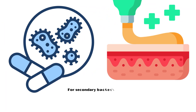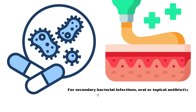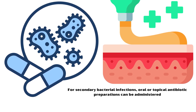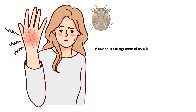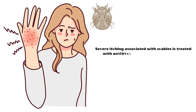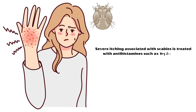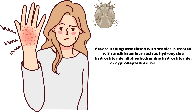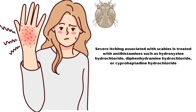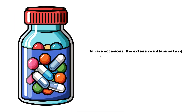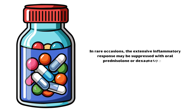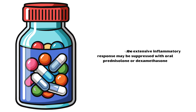Antimicrobial therapy may also be required as patients with scabies tend to develop secondary bacterial infections. For secondary bacterial infections, oral or topical antibiotic preparations can be administered. Severe itching associated with scabies is treated with antihistamines such as hydroxyzine hydrochloride, diphenhydramine hydrochloride, or cyproheptadine hydrochloride. In rare occasions, the extensive inflammatory response may be suppressed with oral prednisolone or dexamethasone.